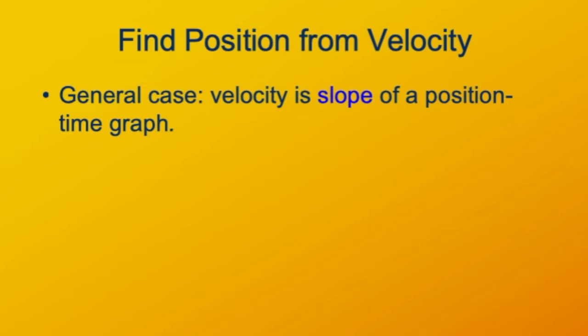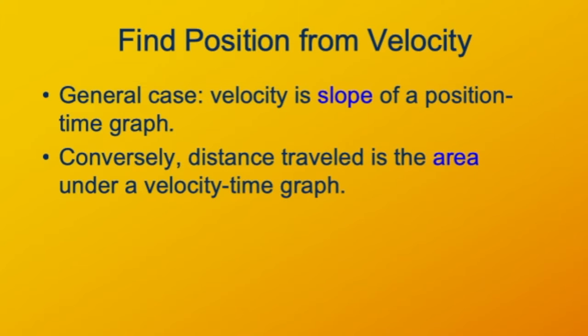In general, velocity is the slope of a position time graph. And conversely, distance traveled is the area under a velocity time graph.